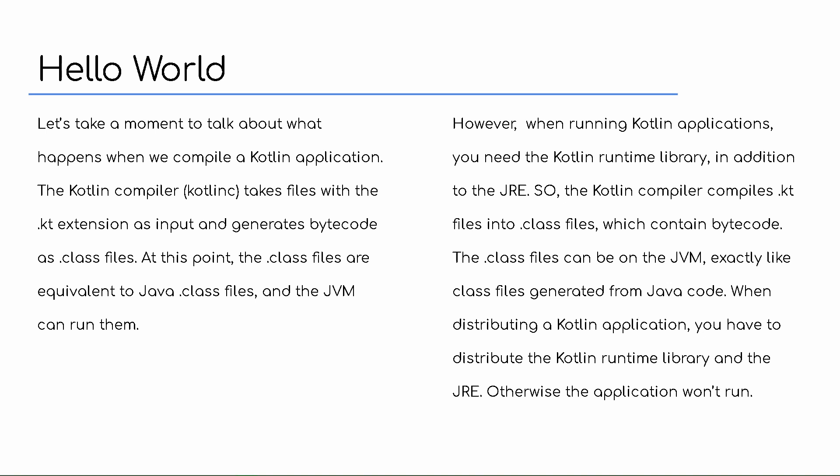The Kotlin compiler, which is called KotlinC, takes files with the .kt extension as input and generates bytecode as .class files. At that point, the .class files are equivalent to Java .class files. So when you're working with Java, the Java compiler compiles your .java files into .class files. When you're working with Kotlin, the Kotlin compiler compiles it down to .class files as well. From that point forward, those .class files look the same to the JVM. An important difference is that when running a Kotlin application, you're going to need the Kotlin runtime library, so if you're distributing your Kotlin application, you also have to distribute the Kotlin runtime library.